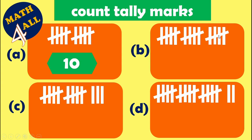Example C: five plus five equals ten, plus three equals thirteen tally marks. Example D: five plus five equals ten, plus five equals fifteen, plus two more equals seventeen tally marks.